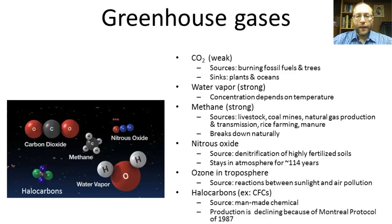Water vapor is a strong greenhouse gas, and its concentration depends on the temperature. Methane is also a strong greenhouse gas. Its anthropogenic sources are livestock, rice farming, and manure. These seem natural, but they are listed as anthropogenic because we are the ones that raise livestock and farm rice. The livestock produce a lot of manure. If it weren't for us, there wouldn't be anywhere near as much livestock or rice farming today.